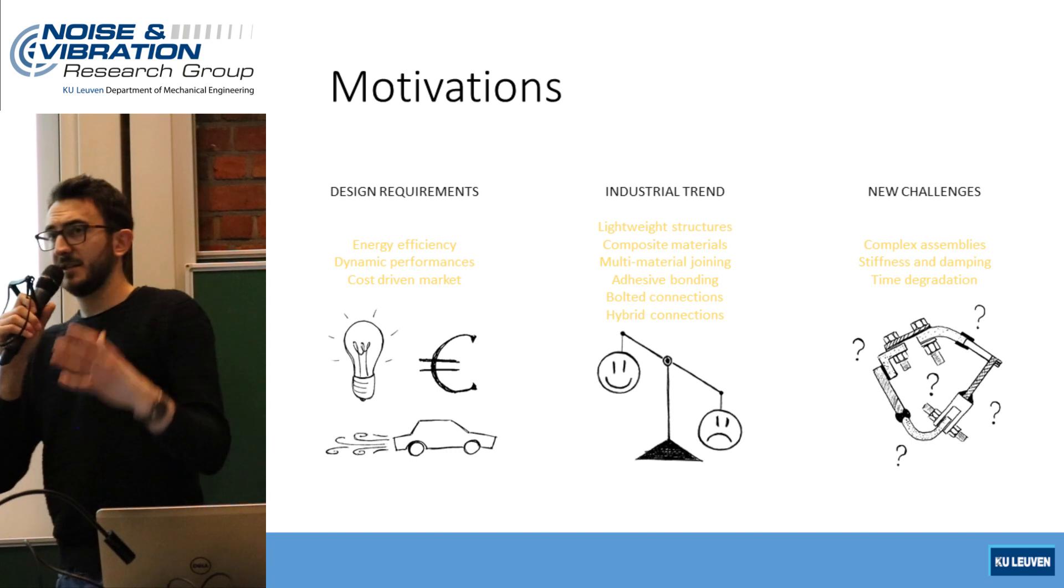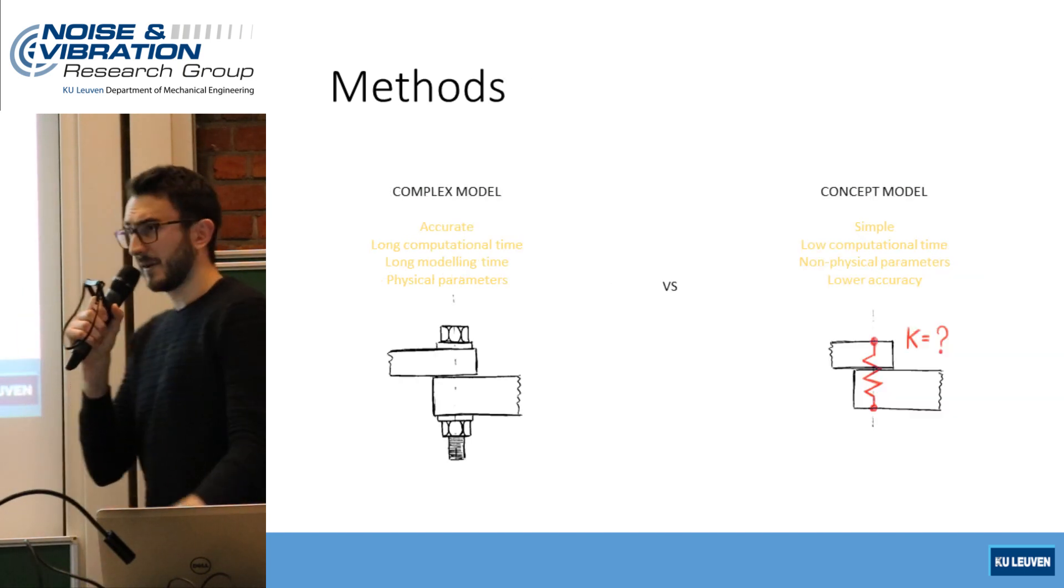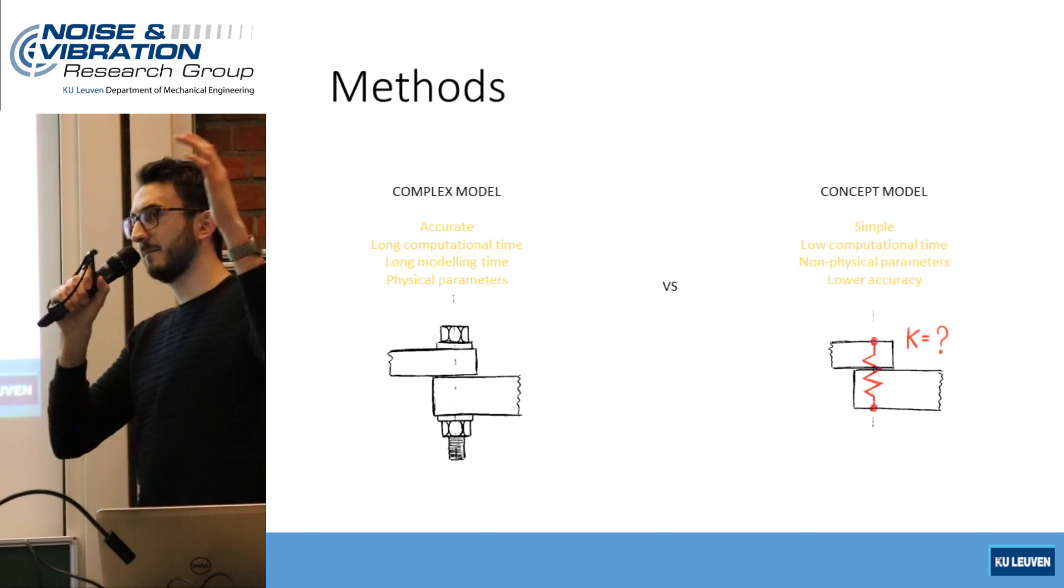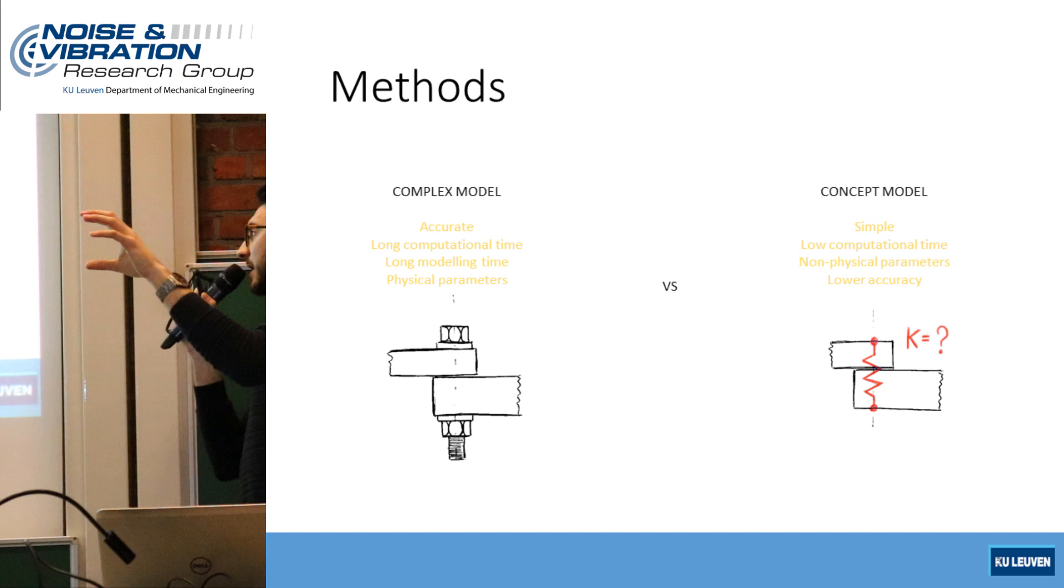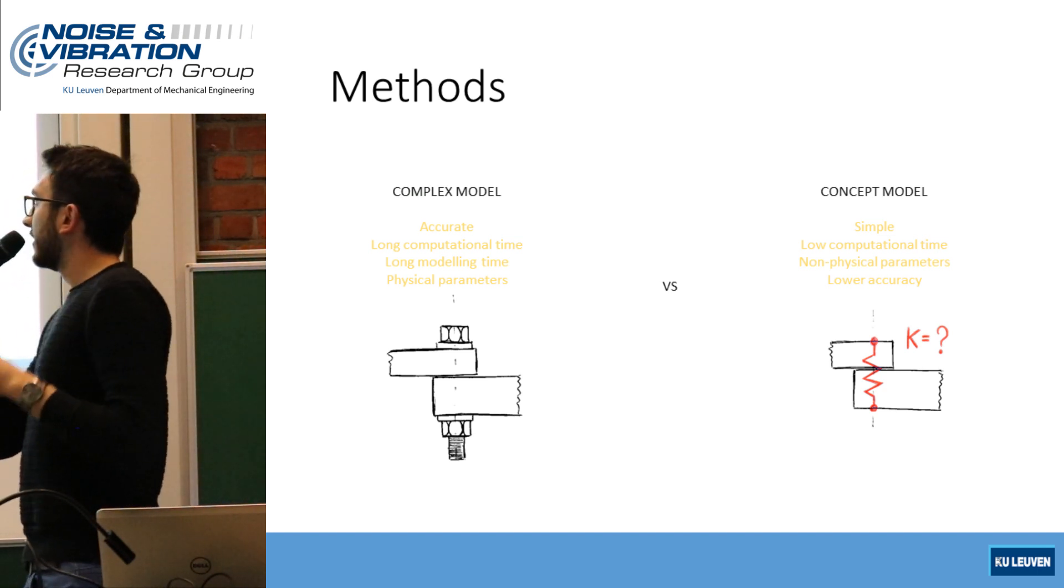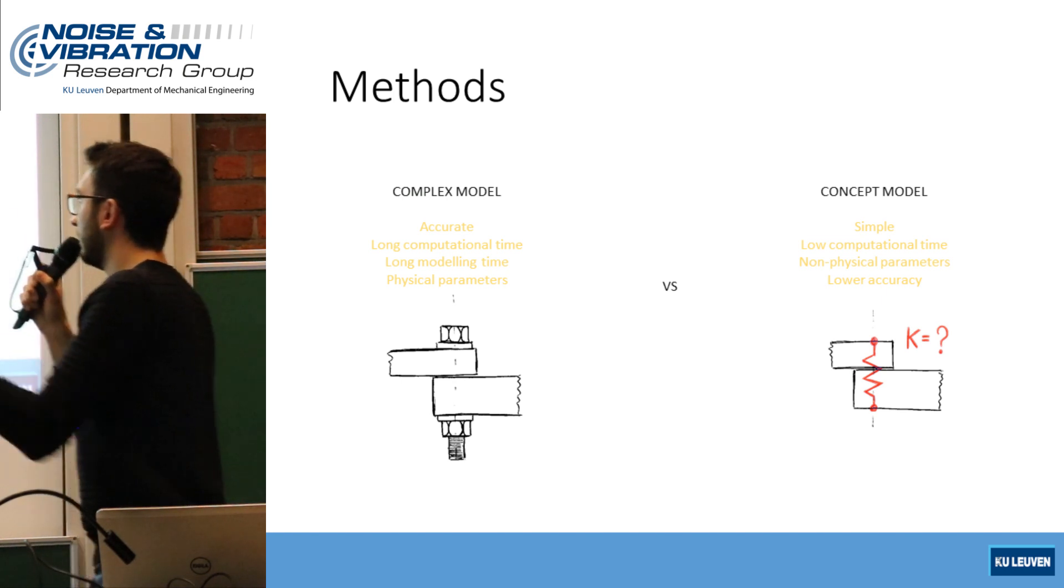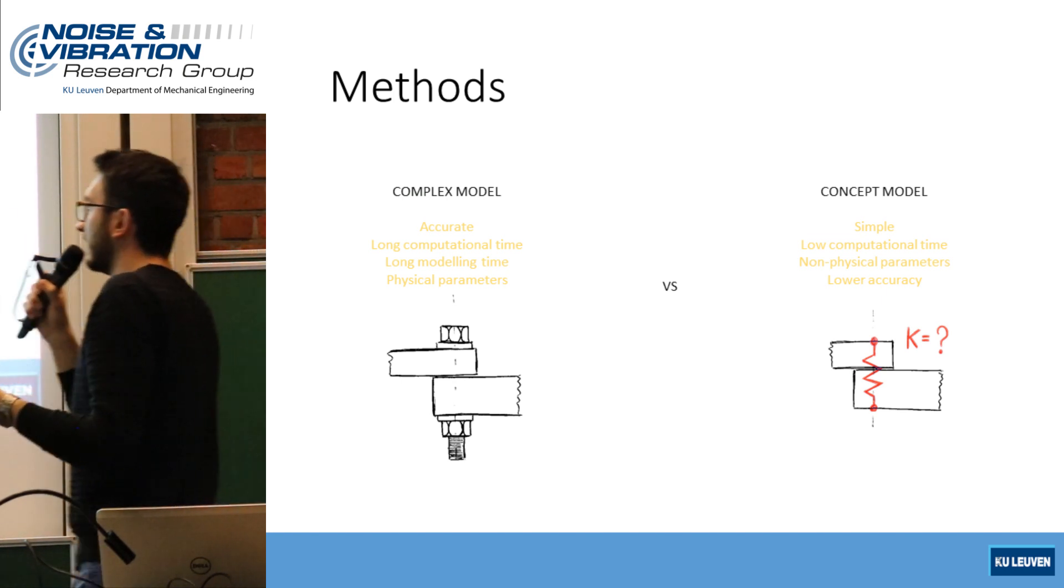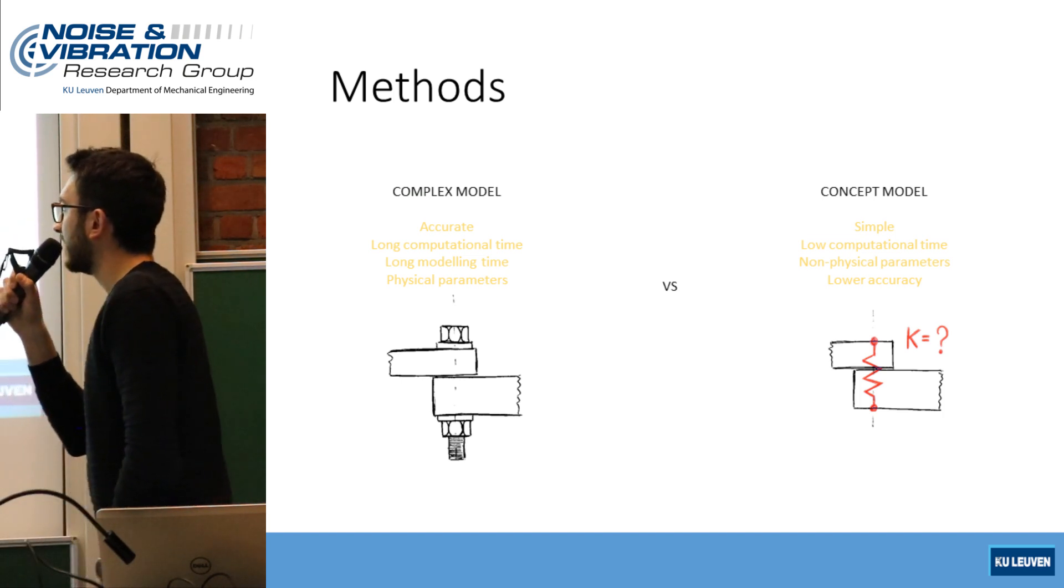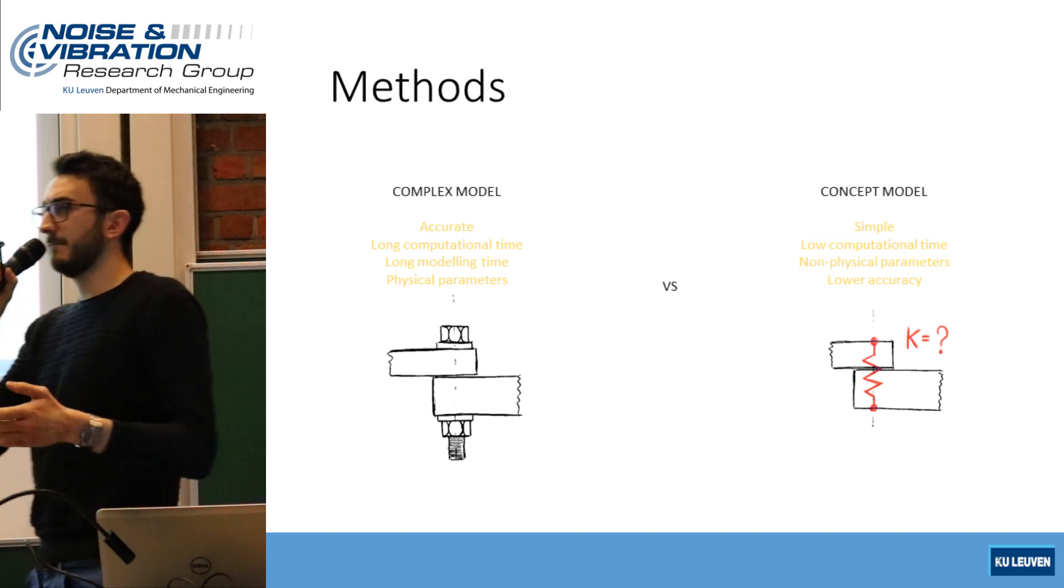The typical approach for us engineers to deal with new challenges is modeling. Particularly in this case, when you have to consider the complex assembly together with the local joining technologies, it is really important to take a decision between modeling those joints using complex models that are accurate but require longer computational times and long modeling times, or using conceptual models that are simple with the cost of lower accuracy.